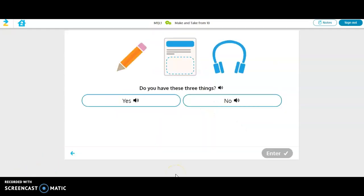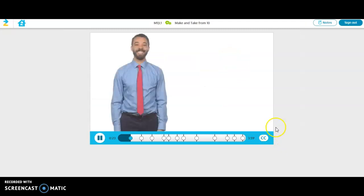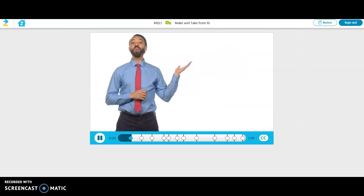It will give you that option if you don't have those things you can definitely go get them, and when you're ready you can click yes that you do have your Zearn notes pages, your pencil, and your headset. When you're ready just keep clicking through the next arrow and let's start the lesson.